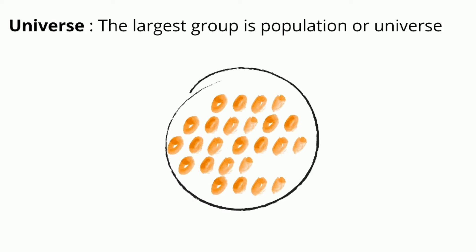Before we start, we need to know about the term universe. Universe, as the name suggests, means we have one largest group. We have to define a universal group, and from that we choose a few samples, which is our population. The largest group of samples is our universe.